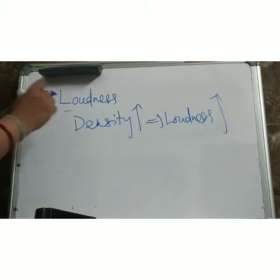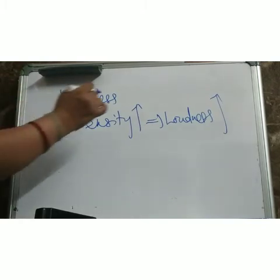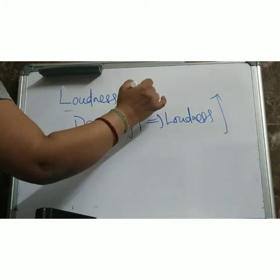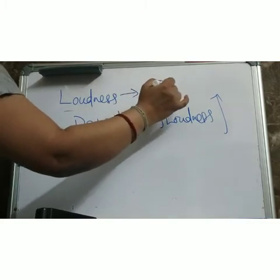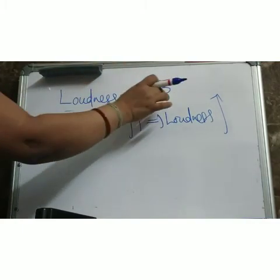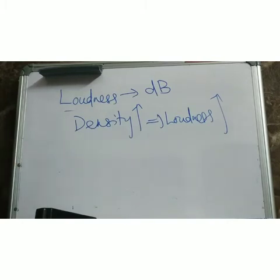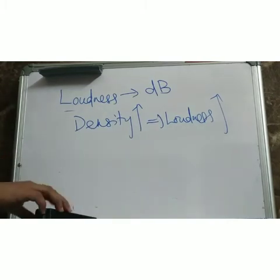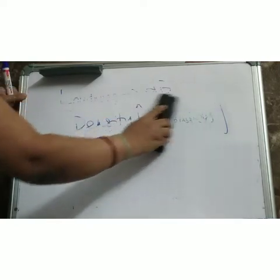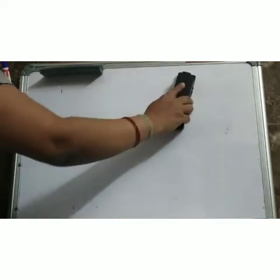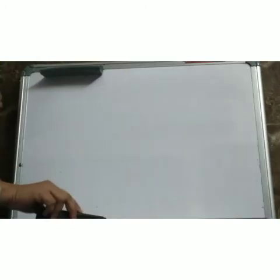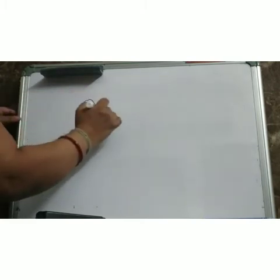How do you measure loudness? The SI unit is decibel, written as dB. In physics, pin drop silence is considered 0 dB. We know there is no true 0 dB, but in physics we consider ideal situations for definitions and comparisons. So pin drop silence is 0 dB — that is the faintest sound.